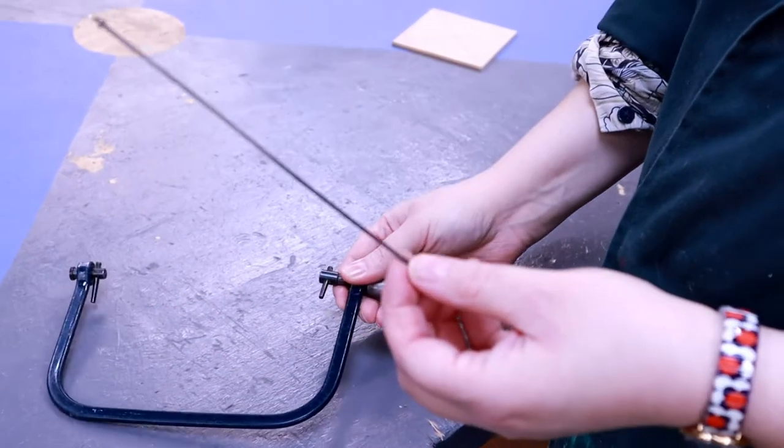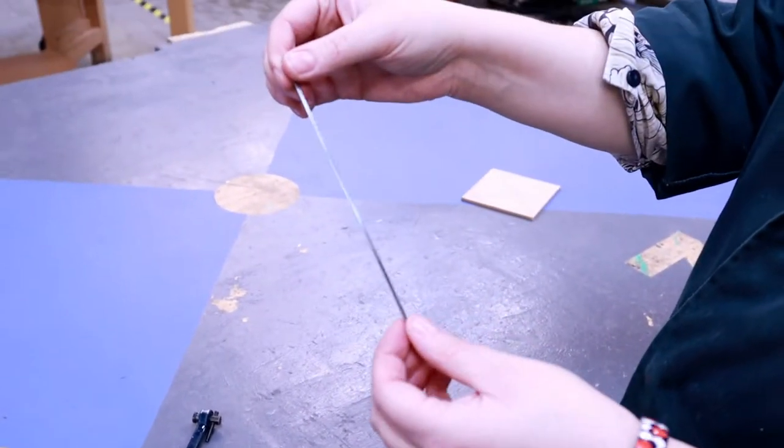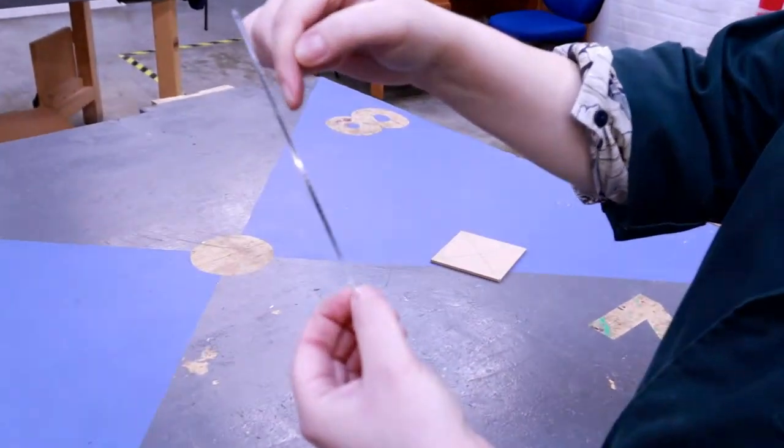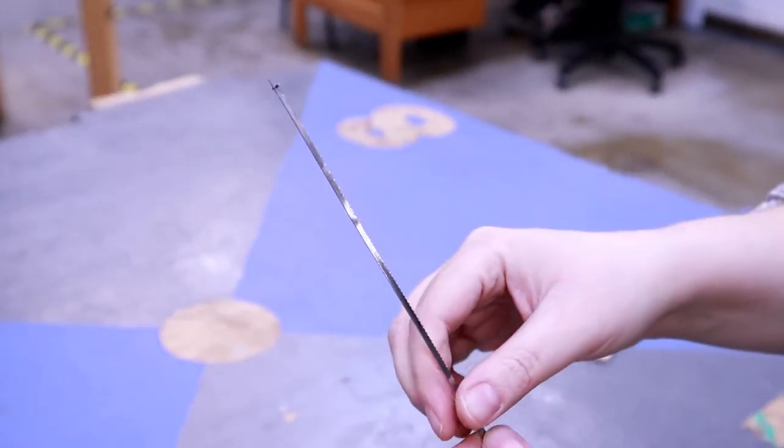To get a coping saw blade on, you need to first get your blade and check which way the teeth are going. The teeth, you can see, need to be pointing down towards the handle.